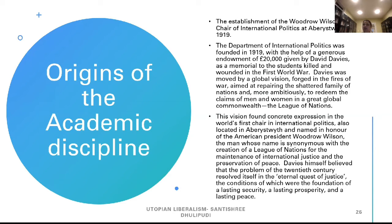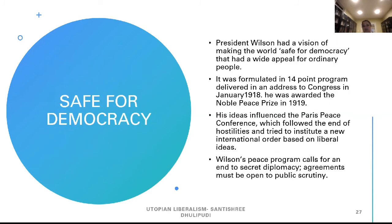The vision found concrete expression in the world's first chair in international politics, named in honor of the American president Woodrow Wilson — the man whose name is synonymous with the creation of a League of Nations for the maintenance of international justice and the preservation of peace. David Davis himself believed the problem of the 20th century resolved itself in the eternal quest of justice, whose conditions were the foundation of lasting security, lasting prosperity, and lasting peace. President Wilson had a vision of making the world safe for democracy that had wide appeal for ordinary people. It was formulated in the 14-point program delivered in an address to Congress. He was awarded the Nobel Peace Prize.